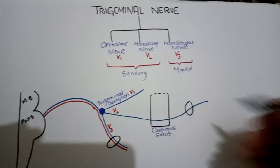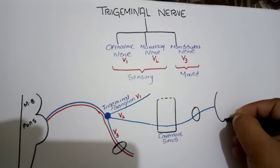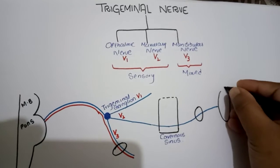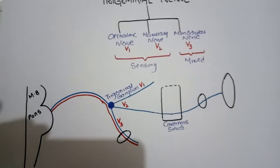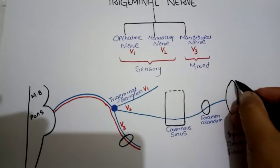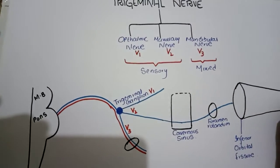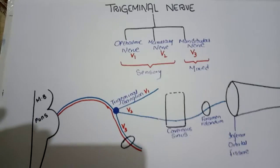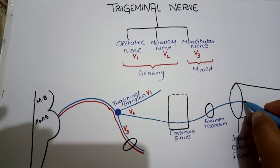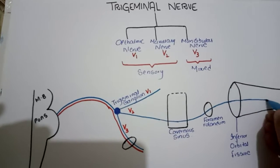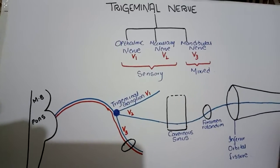The inferior orbital fissure is basically similar to the superior orbital fissure; the main difference is that it is present on the inferior side of the orbital cavity. The canal of the inferior orbital fissure is known as the inferior orbital canal, and through the inferior orbital fissure the maxillary nerve enters the inferior orbital canal. After leaving the inferior orbital canal, it gives its different branches.